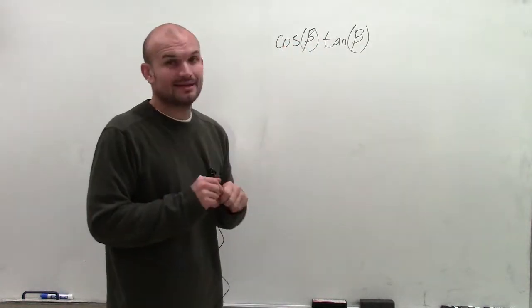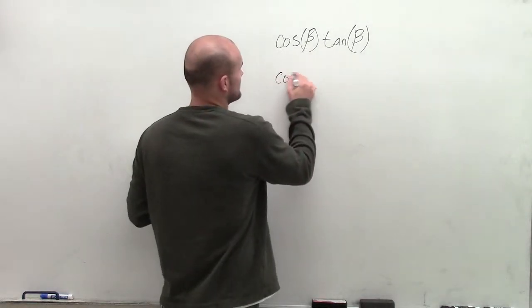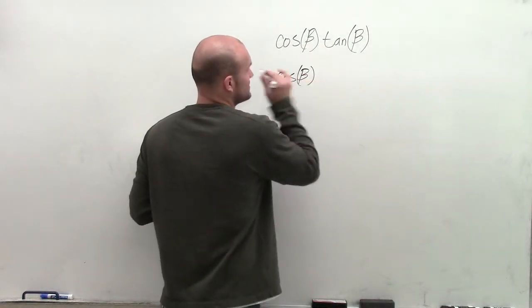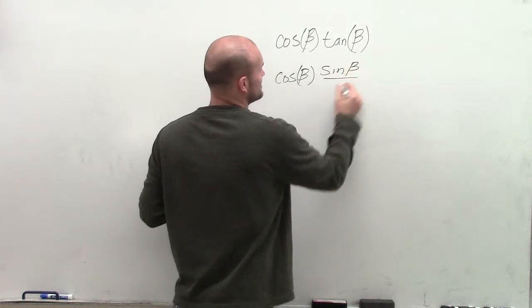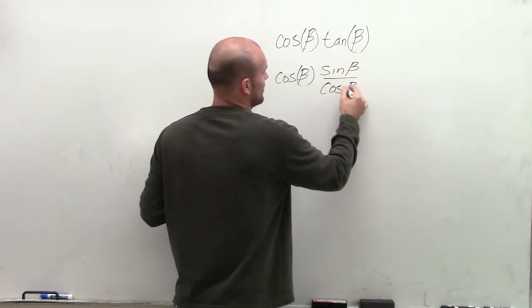So to do that, I'm just going to rewrite the tangent of beta. So I have cosine of beta times the tangent of beta. Well, tangent can be rewritten as the sine of beta divided by the cosine of beta.